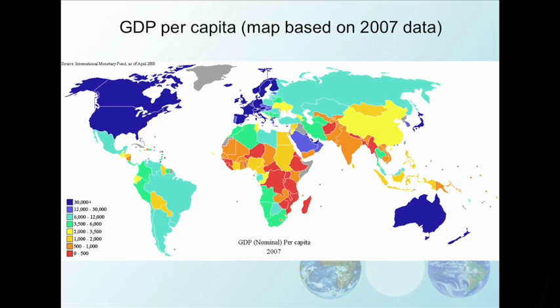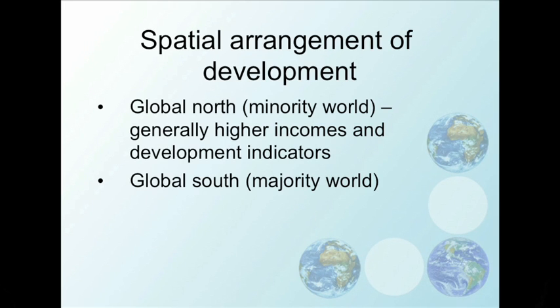If we look at the spatial arrangement of development, we see that what we can term the global north generally has higher incomes and higher development indicators. We can think about this part of the world as the minority world in terms of population — these folks might be living quite well in terms of development indicators, but most folks in the world aren't. We can look at the global south as the majority world, where people tend to have lower incomes and lower development indicators.